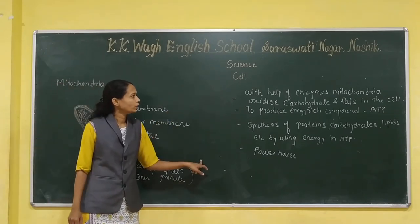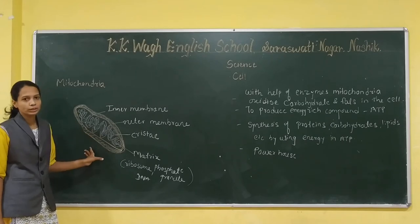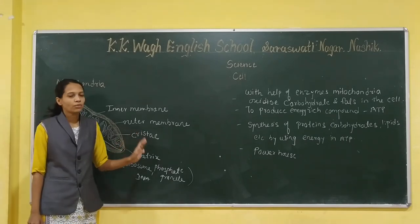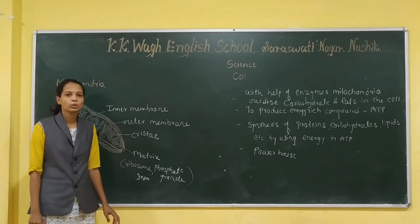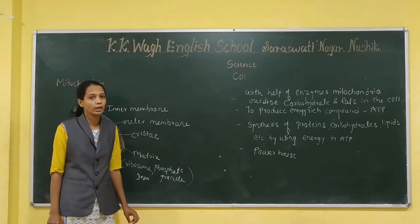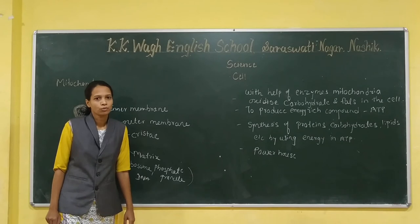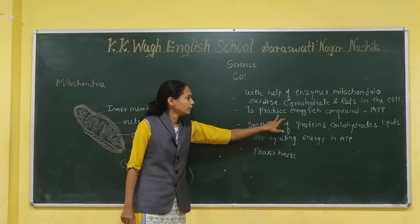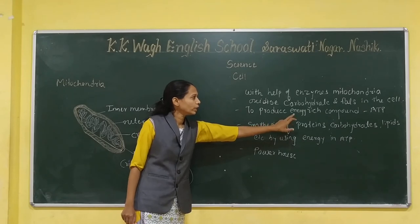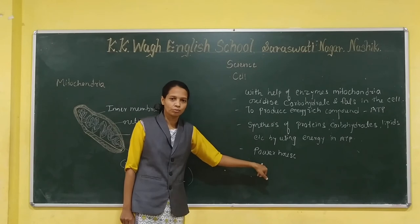The function of the mitochondria: with the help of enzymes, mitochondria oxidize carbohydrates and fats in the cell. In this process, it produces energy in the form of ATP molecules — it produces 38 molecules of ATP. ATP is adenosine triphosphate. Because it produces its own energy compound ATP, it is also called the powerhouse of the cell.